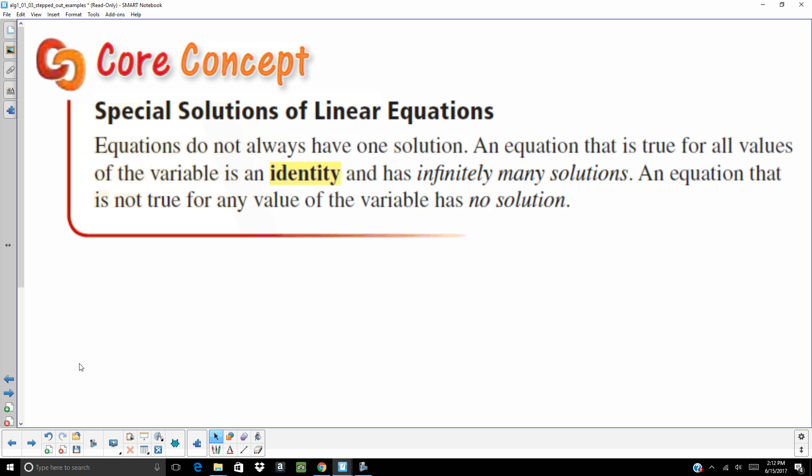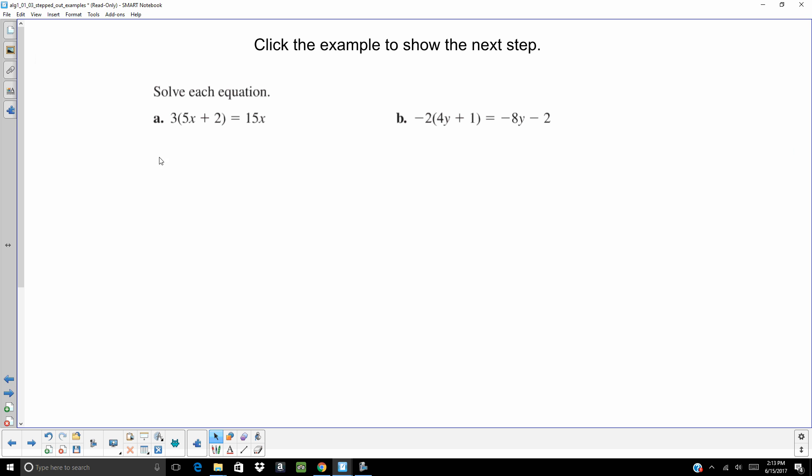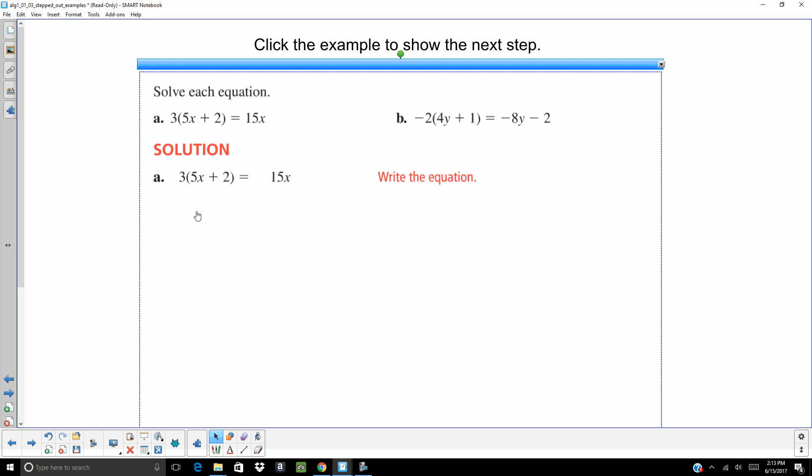Let's talk about special solutions. Equations do not always have one solution. An equation that is true for all values of the variable is an identity. It has infinitely many solutions. An equation is not true for any value. It has no solutions. Let's see what I mean by that. On that first one, I've got 3 times quantity 5x plus 2 equals 15. First thing I would do, use that distributive property. Subtract 15x from both sides, and I get 6 equals 0. That's never going to be a true statement. So, that has no solution.